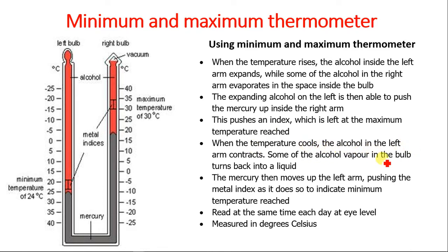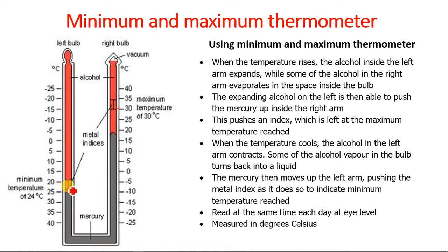When the temperature cools, the alcohol in the left arm contracts and the alcohol vapour in the bulb turns back into a liquid. The mercury then moves up in the left bulb, pushing the metal index up to indicate the minimum temperature reached. You read the thermometer at the same time each day, measuring in degrees Celsius. The left bulb measures minimum temperature and the right bulb measures maximum temperature.